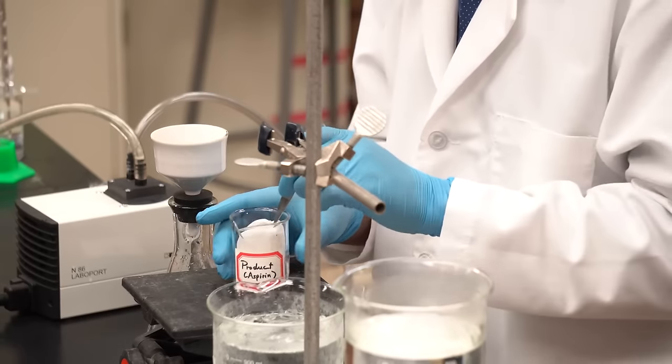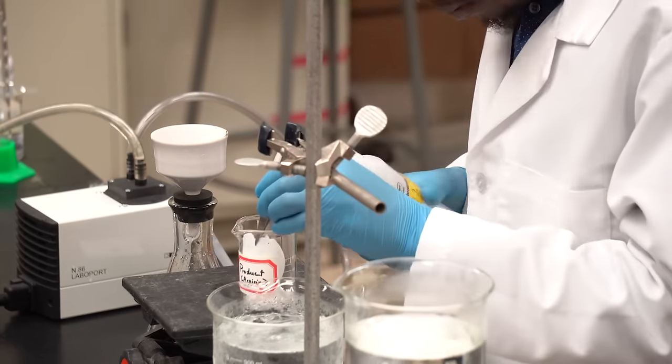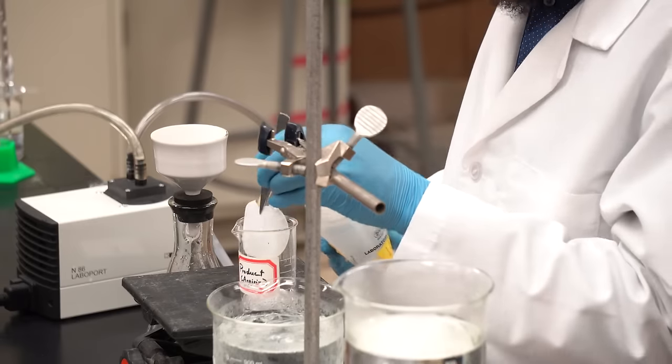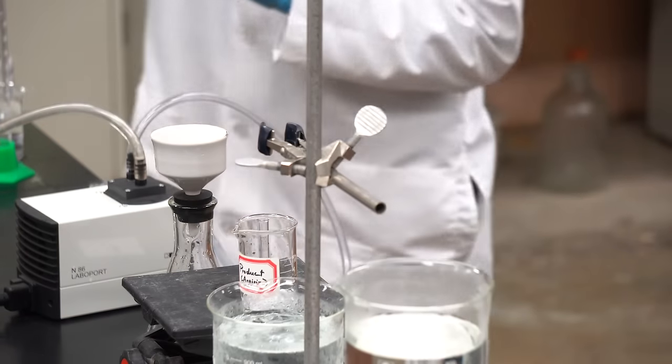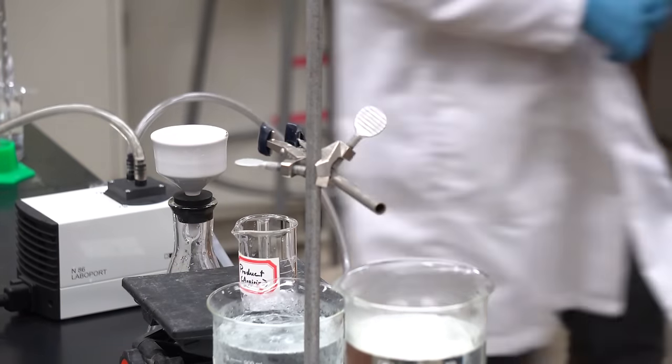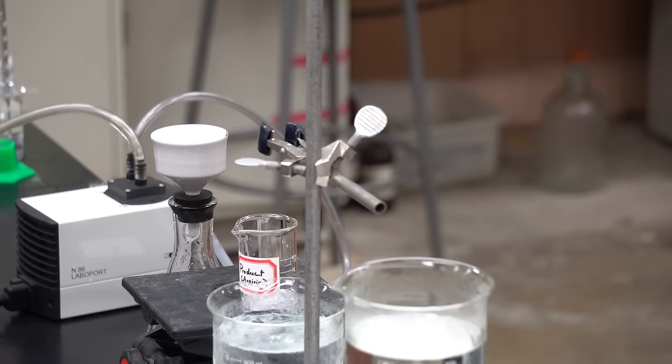Let's then collect our product in another vessel. We'll make sure to save all our product by rinsing the filter paper with ethanol into our beaker. Even though we've collected our product, it is not totally pure. This is because it still has trace amounts of the starting materials. We'll have to perform recrystallization to purify our product.